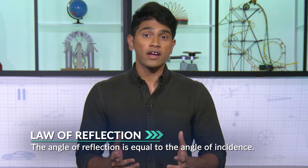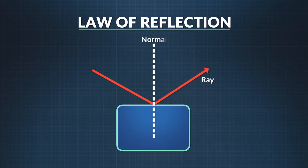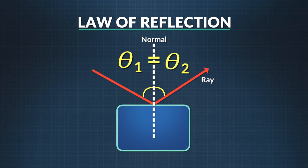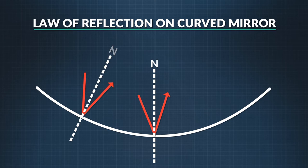So we've talked about real images, which can be formed by concave spherical mirrors, and virtual images, which can be formed by either concave or convex mirrors. Concave and convex mirrors may create very different images, but they share certain qualities. They both follow the law of reflection, which says the angle of reflection is equal to the angle of incidence — measured from the normal, a line perpendicular to the surface. Each ray hits a single point on the curved surface and bounces off at the same angle at which it hit.